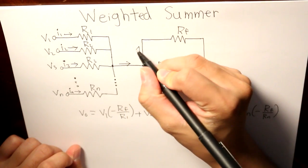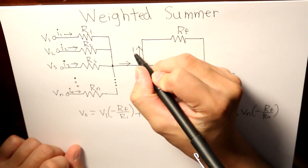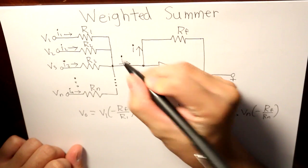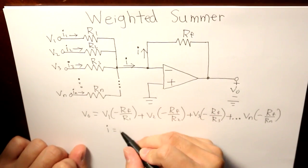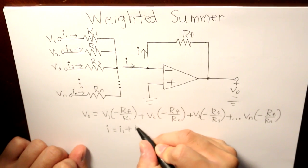This lowercase i, if you apply KCL to it, would basically be like this.